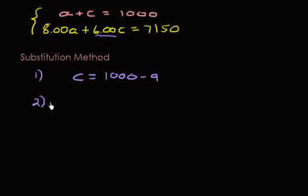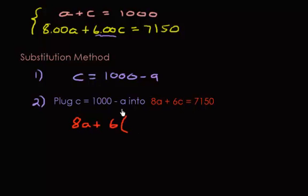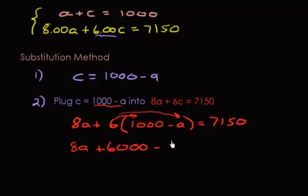Step two: plug C equals 1,000 minus A into the other equation. We get 8A plus 6 times (1,000 minus A) equals 7,150. Distribute the 6 into the parentheses. We get 8A plus 6,000 minus 6A equals 7,150.